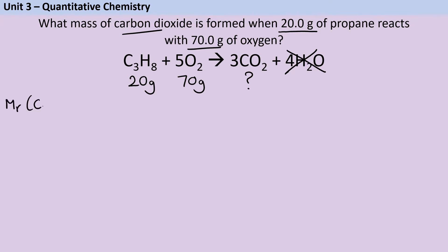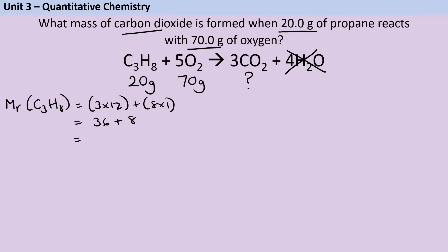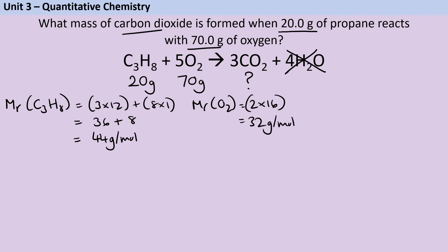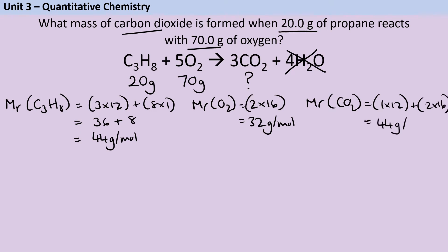My first real step is to work out the relative formula mass of each substance by adding up the masses of the different atoms. For propane (C₃H₈): 3 × 12 plus 8 × 1 gives me 44 grams per mole. For oxygen (O₂): 2 × 16, which is 32 grams per mole. And for carbon dioxide (CO₂): 1 × 12 plus 2 × 16, which is also 44 grams per mole by coincidence.